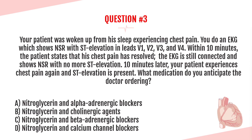Question number three. Your patient was woken up from sleep experiencing chest pain. You do an EKG, which shows normal sinus rhythm with ST elevation in leads V1, V2, V3, and V4. Within 10 minutes, the patient states the chest pain has resolved. The EKG still connected shows normal sinus rhythm with no more ST elevation. Ten minutes later, your patient experiences chest pain again and ST elevation is present. What medication do you anticipate the doctor ordering? A, nitroglycerin and alpha-adrenergic blockers; B, nitroglycerin and cholinergic agents; C, nitroglycerin and beta-adrenergic blockers; or D, nitroglycerin and calcium channel blockers.